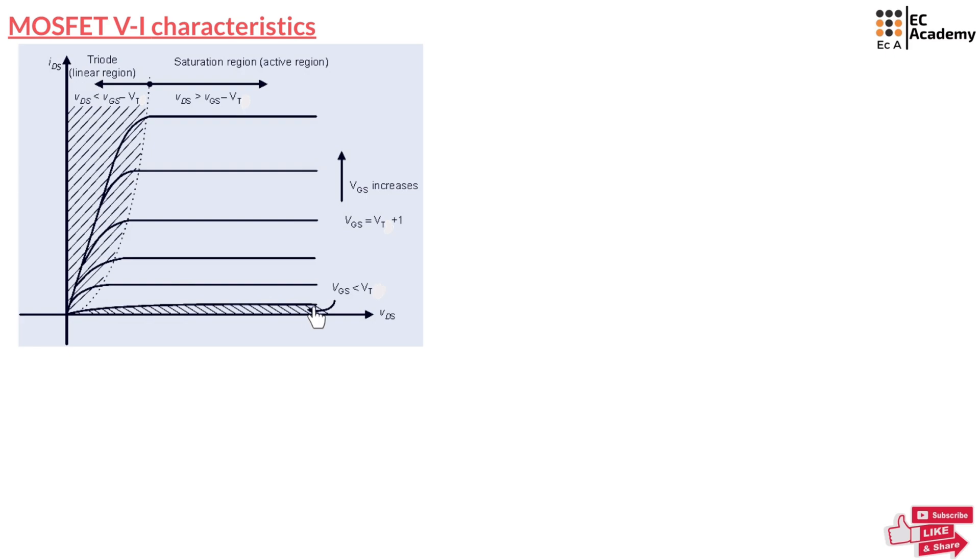As you can observe, as VDS increases, the drain current increases linearly, and after some time this current will become constant. In these characteristics, we can identify three regions. The first region is the cutoff region where the transistor is not conducting. The region where the drain current has become constant is known as the saturation region or active region.